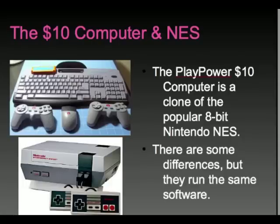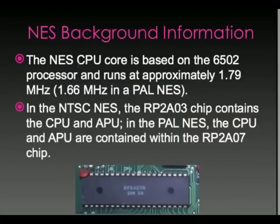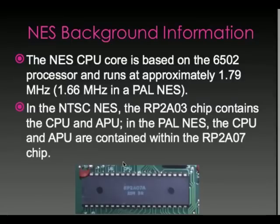NES background information: The NES CPU, or Central Processing Unit, is based on the 6502 processor. It runs at 1.79 MHz, or 1.66 MHz in a PAL NES. This is the same CPU that was used in the Commodore 64, the Atari 2600, and many other older computers and video game consoles — and the same CPU core used in the PlayPower $10 computer. In the PAL version of the NES, the chip contained the CPU and the APU in one chip.